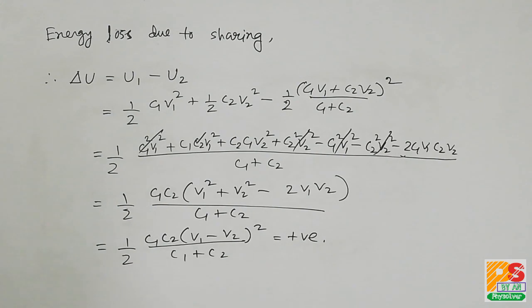Finally we will have delta U as half C1 C2 V1 minus V2 whole square divided by C1 plus C2, which is a positive quantity.